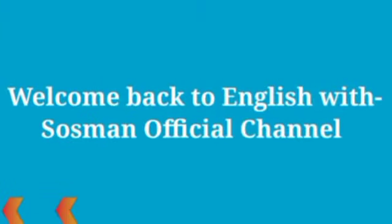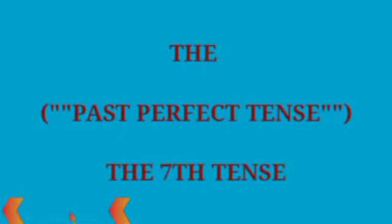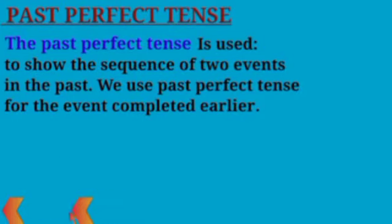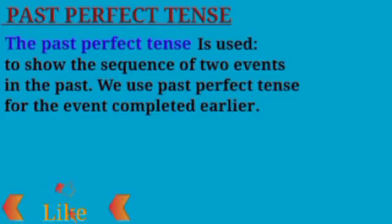Welcome back to English with Soisman Official Channel. Today we cover grammar: the Past Perfect Tense, also called the seventh tense. The Past Perfect Tense is used to show the sequence of two events — a set of two things occurring next to each other in order. In the past, we use the Past Perfect Tense for the event that was completed earlier.